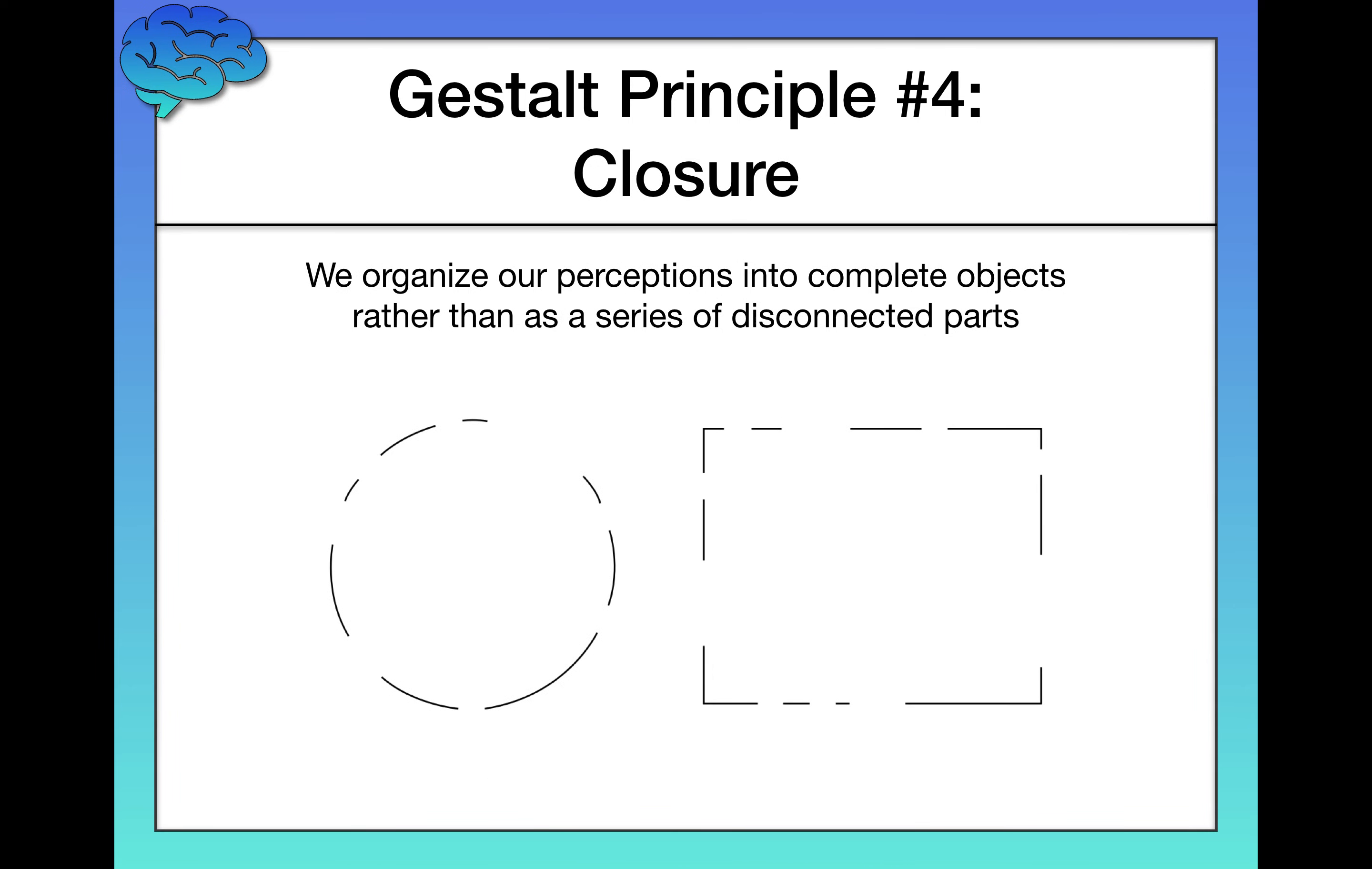Next, we have the principle of closure. This is the idea that we organize our perceptions into complete objects rather than as a series of disconnected parts. So here you probably see what? A circle and a rectangle.